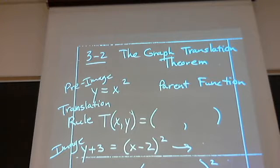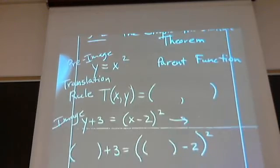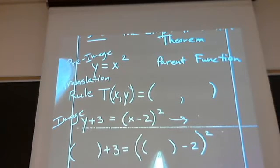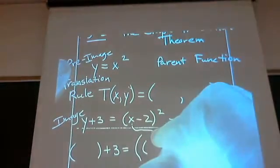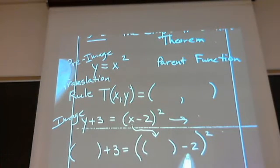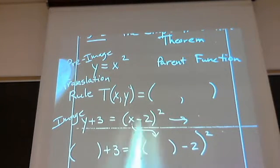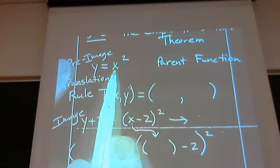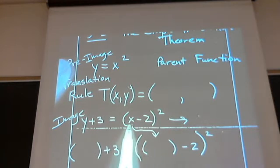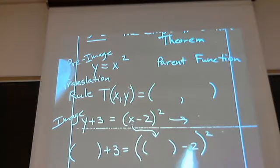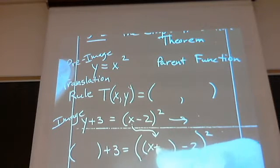My question to you is this: what would you need to replace the x with so that you could get back to just plain x? In other words, what would you put in for x which would cause this minus two to disappear? Well, I'm hoping that you would all say x plus two.